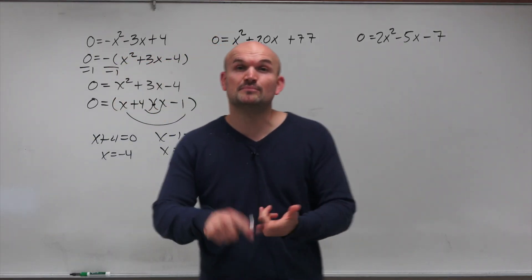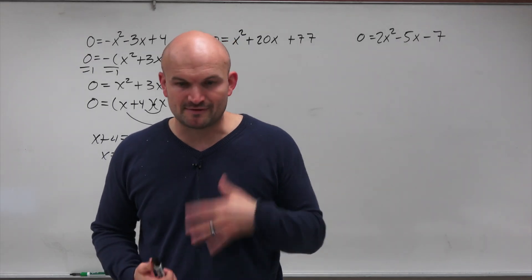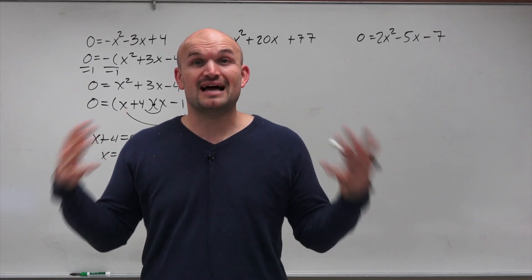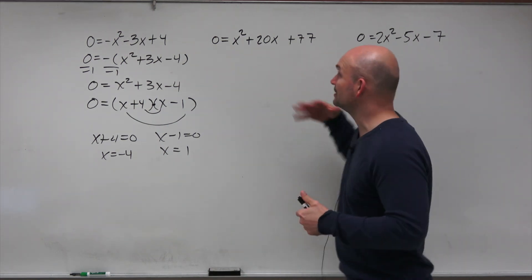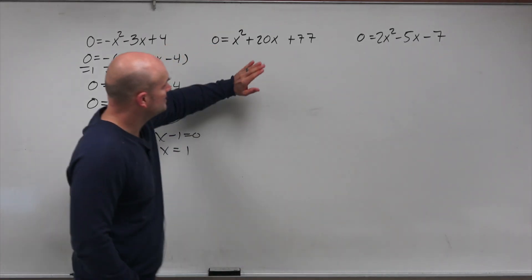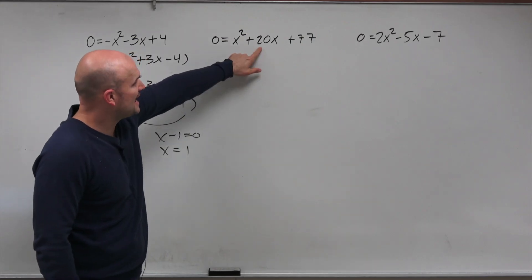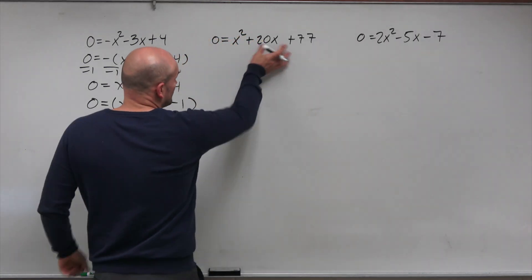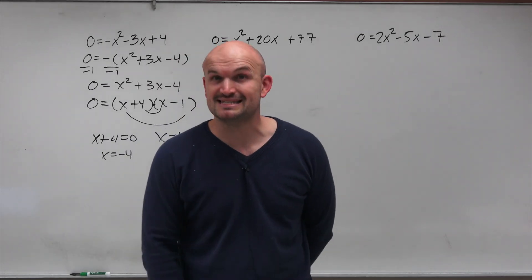So our options are either completing the square or the quadratic formula. The quadratic formula involves b squared minus 4 times a times c — a lot of multiplication — and I want to avoid that if possible. However, if I can complete the square and my middle term is even, solving by completing the square is not going to be that bad. So in this case, completing the square is going to be my easiest technique.